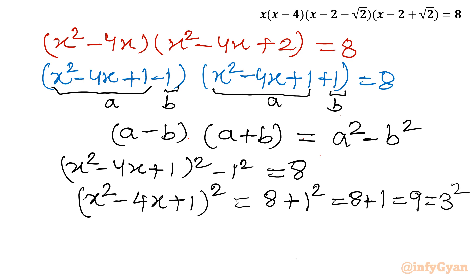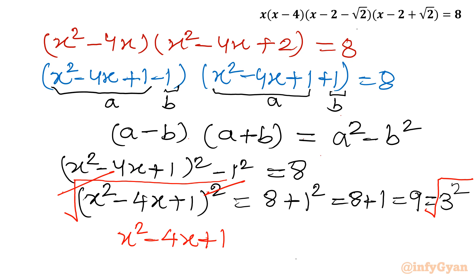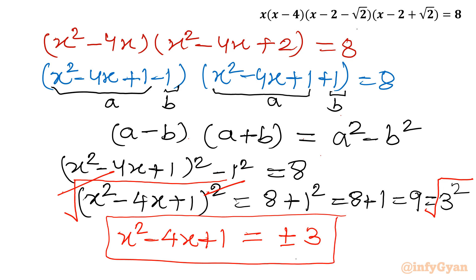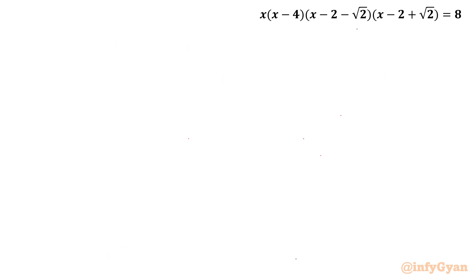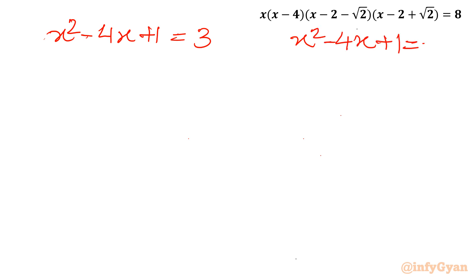Now 9 equals 3², so I take the square root of both sides. Cancelling the square and square root, x² minus 4x plus 1 equals ±3. This gives us two quadratic equations: one with +3 and one with minus 3. So let us frame these two quadratic equations: x² minus 4x plus 1 = 3, and x² minus 4x plus 1 = minus 3.